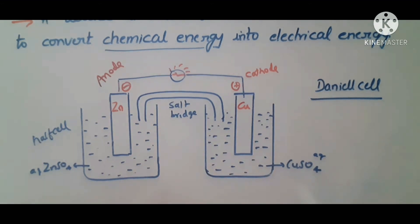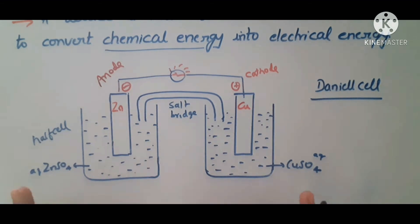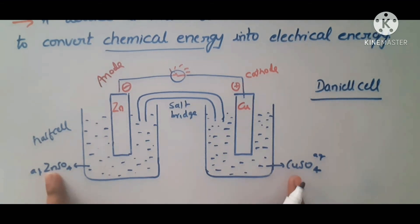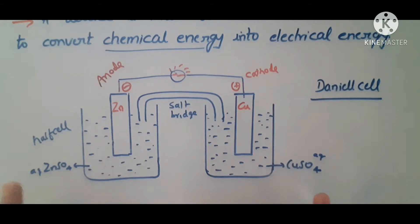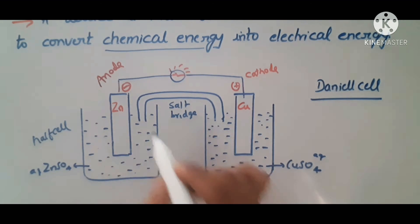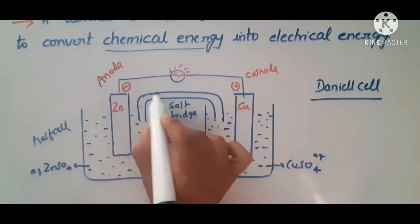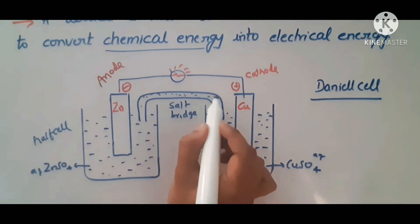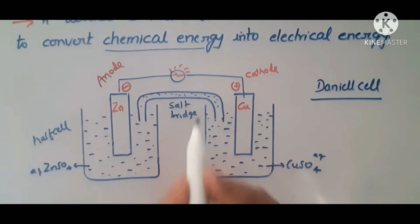The significance of the salt bridge is that it balances the electric concentrations between the two half cells as electrons move and oxidation-reduction reactions occur. The salt bridge contains inert salts such as KCl, KNO3, or ammonium sulfate.